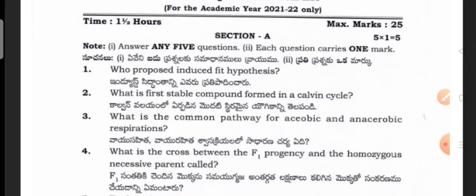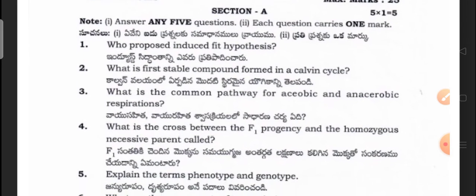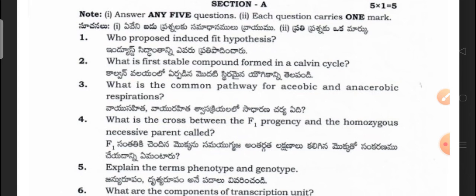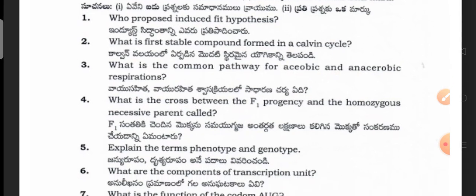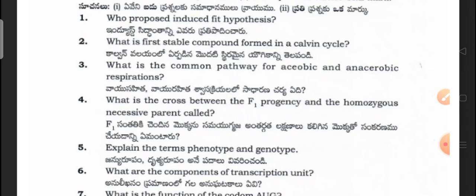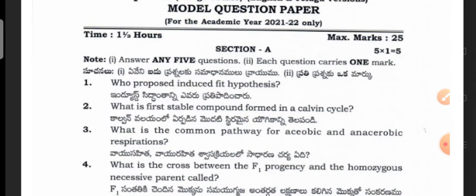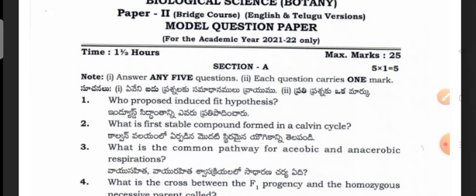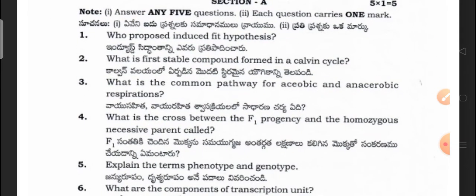First we will see the questions. Who proposed the induced fit hypothesis? What is the first stable compound formed in the Calvin cycle? You have to write one answer per question.